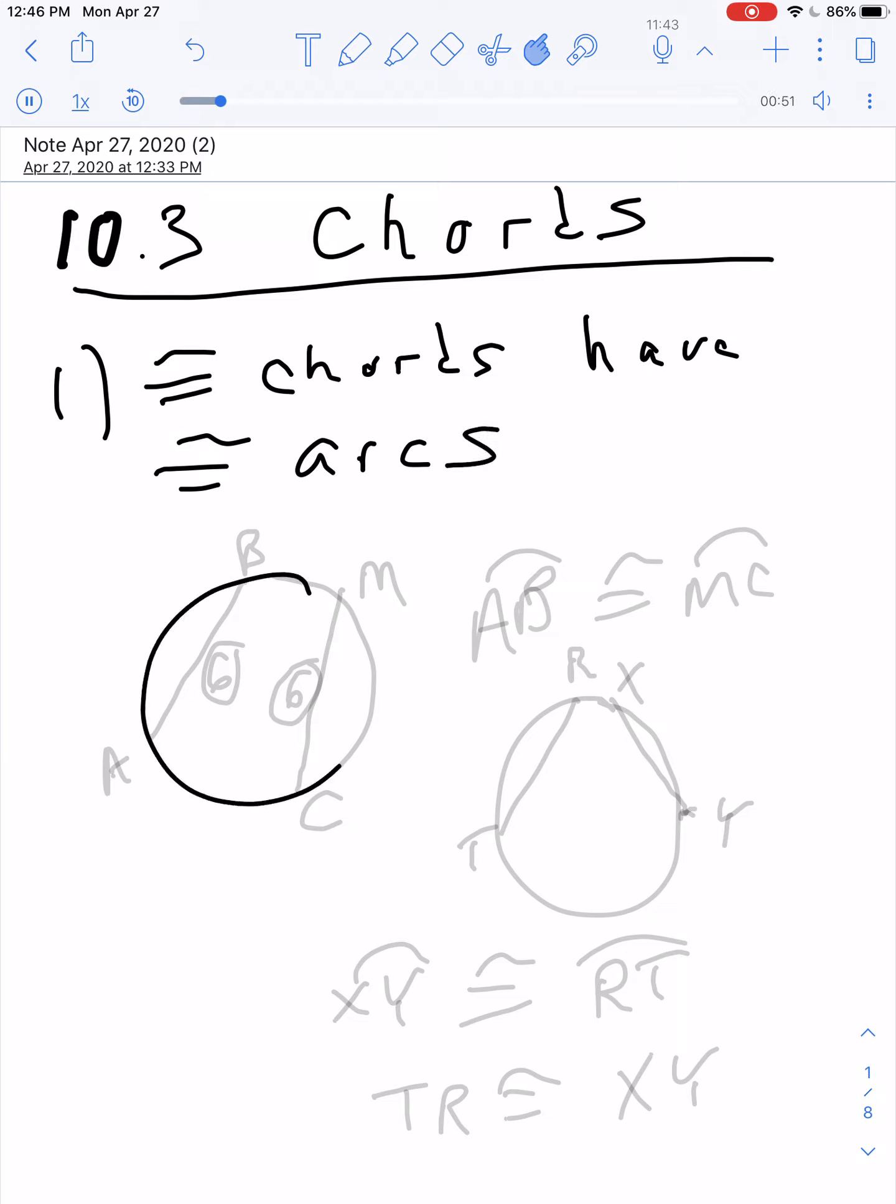For example, if you have a chord here that measures 6, and you have a chord on the other side over here that measures 6, then arc AB and arc MC will also be equal or congruent. So if the chords are congruent, 6 and 6, then the arcs are congruent, and vice versa.